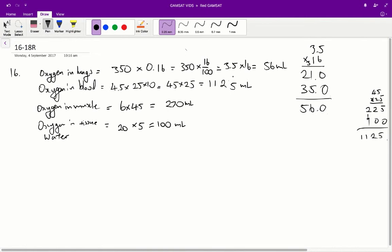So from there, it's pretty simple. You get 45 times 25. And if you do the hand multiplication, as demonstrated over here, you get 1,125 milliliters. As for oxygen in the muscle, we have 6 kilograms and 45 mils of oxygen per kilogram. So that's pretty simple. 6 times 45. You get 270 mils.